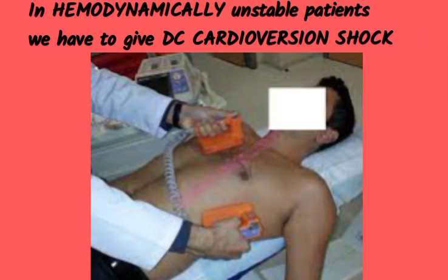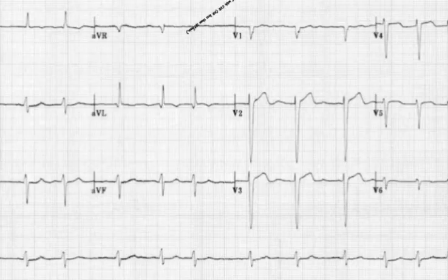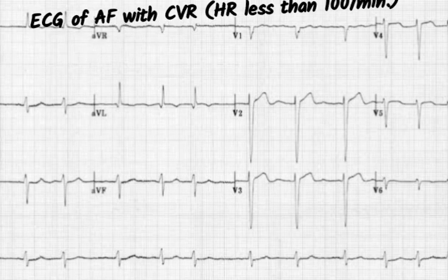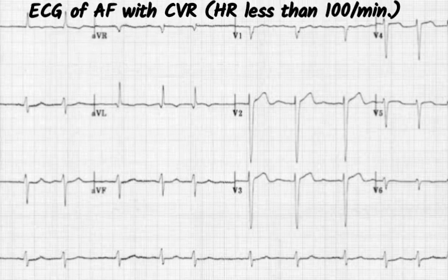In hemodynamically unstable patients, we have to give DC cardioversion shock because the patient's BP is very low and the patient is hemodynamically unstable. This ECG is an example of AF with CVR, where the heart rate is less than 100 beats per minute.